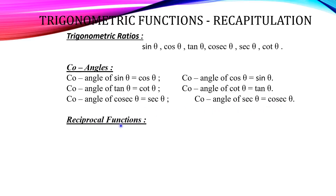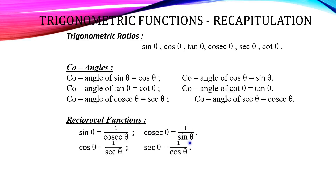Next we are going to see the reciprocal functions. Sin θ = 1/cosecant θ, and cosecant θ = 1/sin θ. Cos θ = 1/secant θ, and secant θ = 1/cos θ. Tan θ = 1/cot θ, and cot θ = 1/tan θ. These are called the reciprocal functions.